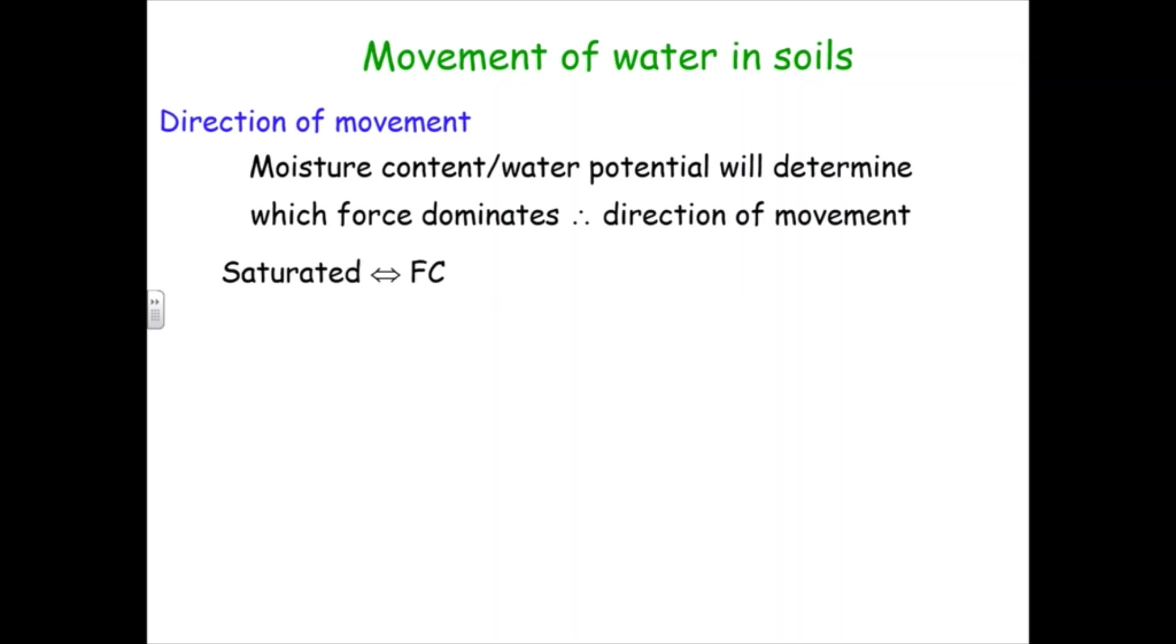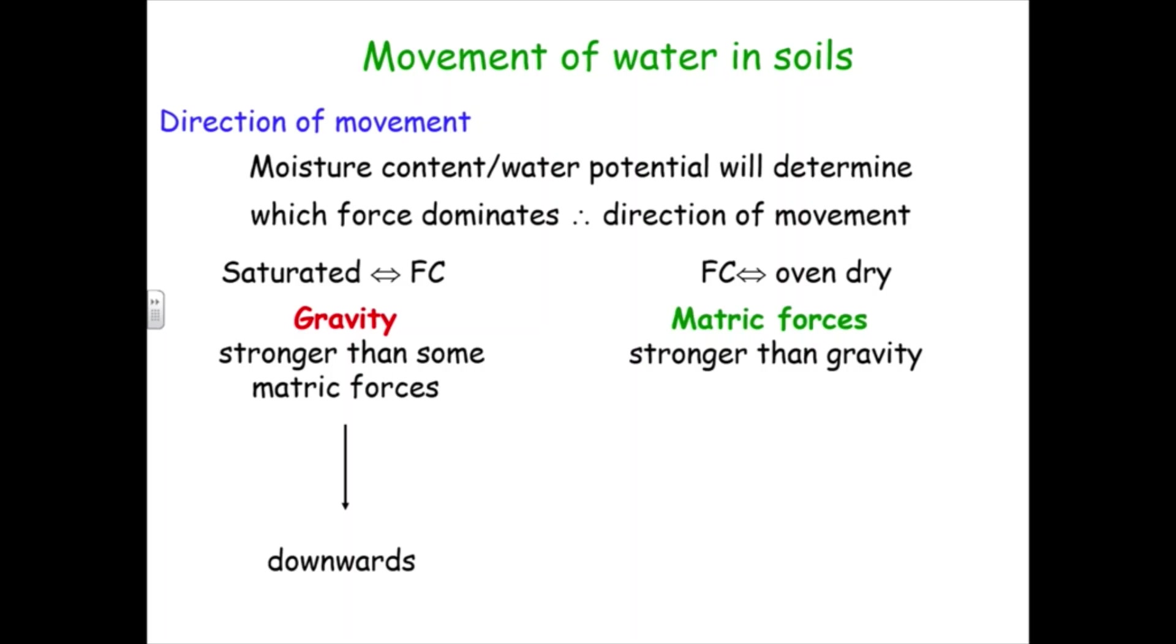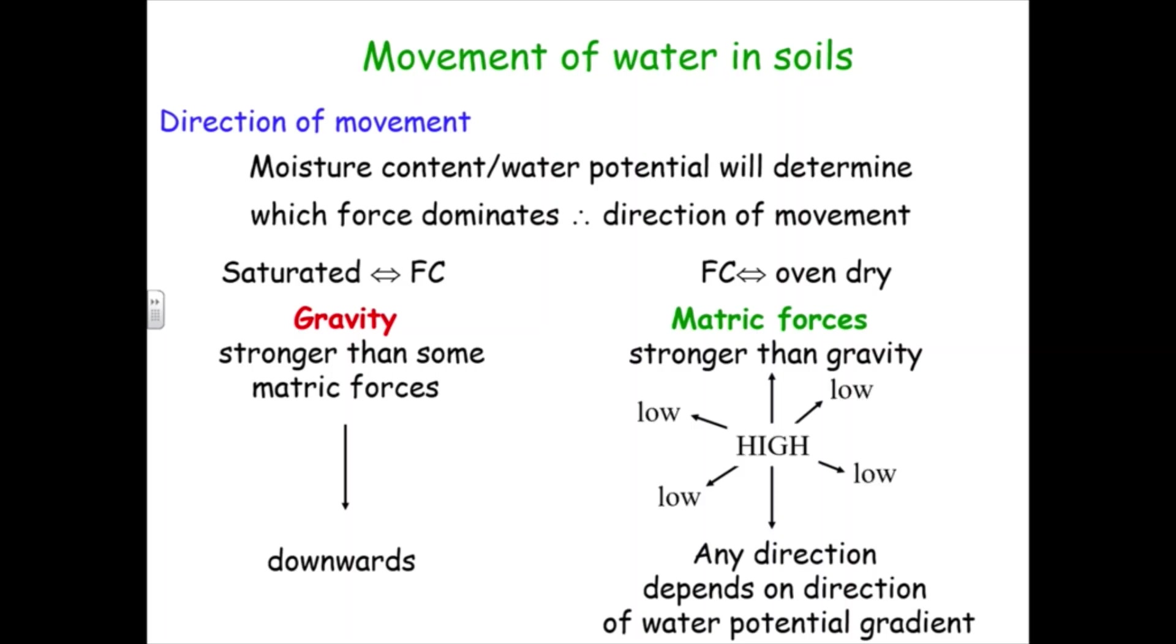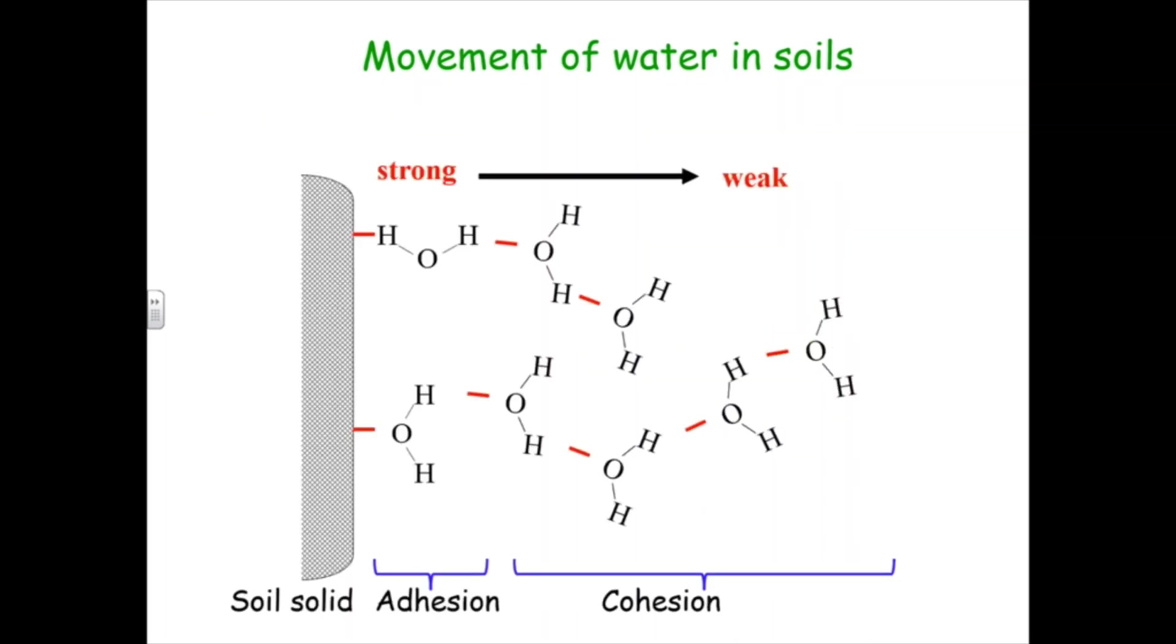That plays out with direction of water movement. Where you have between saturation and field capacity, because it's free drainage, gravity is stronger than the metric forces, so movement is always downwards. No other option. Always downwards under free water in a soil that can drain. Once you get below field capacity, drier than field capacity, then metric forces are stronger than gravity. And the direction of movement will be due to the water potential gradient. That can be in any direction, but it will always be from high to low. It always goes from wet where it's not held strongly to low water potential where it's held strongly. That's because water, just like you and I, all they want out of life is to be held tightly.